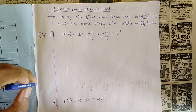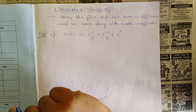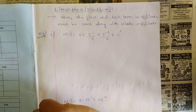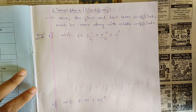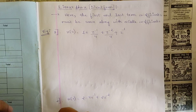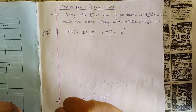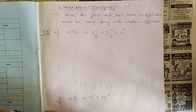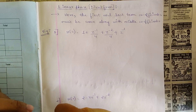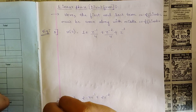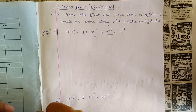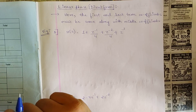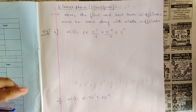Hello everyone, welcome back to our channel and welcome to this new session. In our last session we started with FIR structures and discussed two simple example problems. We covered two kinds of structures in FIR: direct form and cascaded form, which we will discuss in upcoming sessions. In this session I am going to solve a few problems inside direct form.